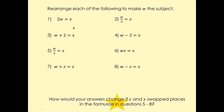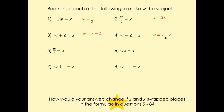Just have a look at the answers now. The first one: you have 2w, and you want to make w as a subject. So divide by two on both sides — w equals x over 2. Here it is times by two on both sides, so w equals 2x. Here you've got plus two, so minus two on both sides — that's going to be w equals x minus two. Here, that's minus two, so plus two on both sides — w is going to be x plus two.